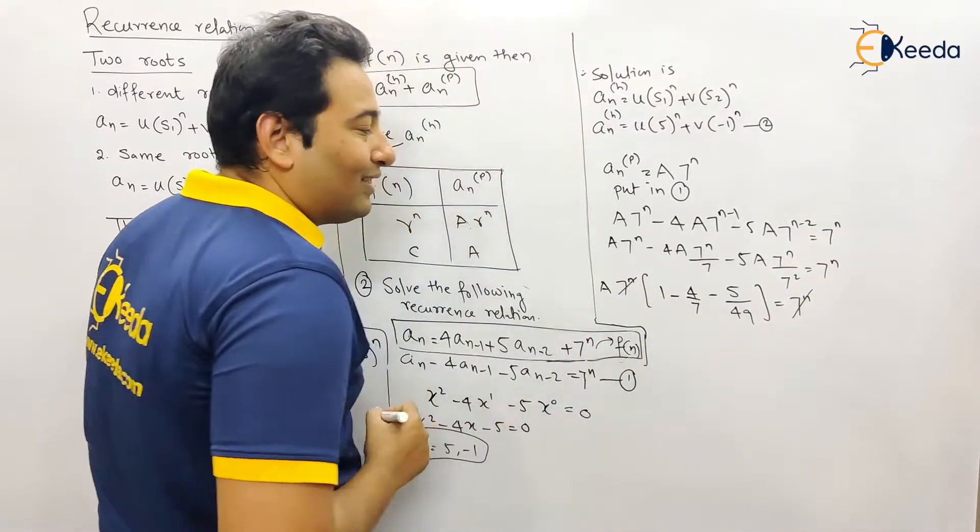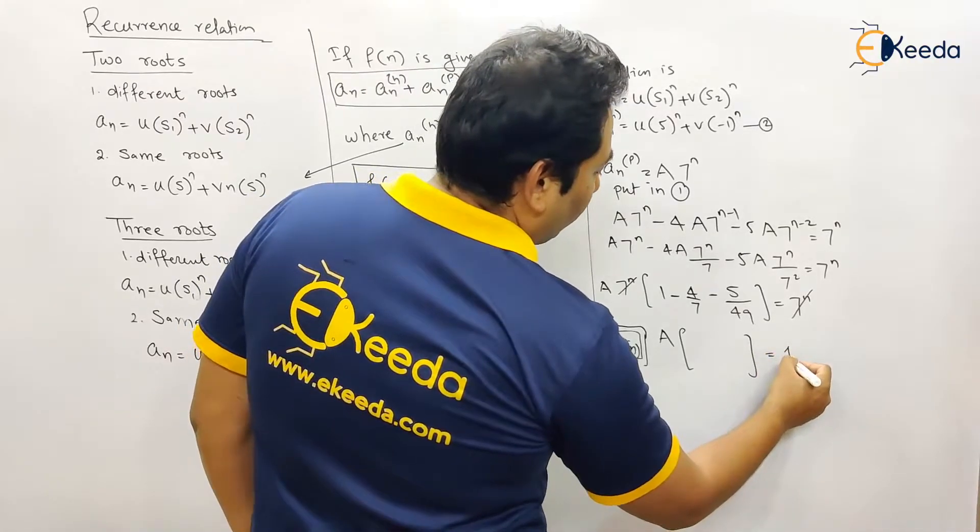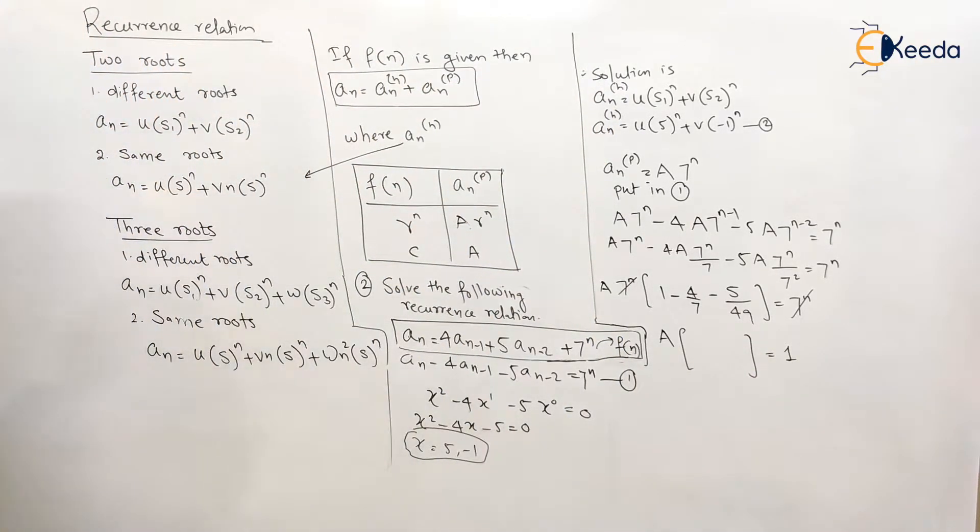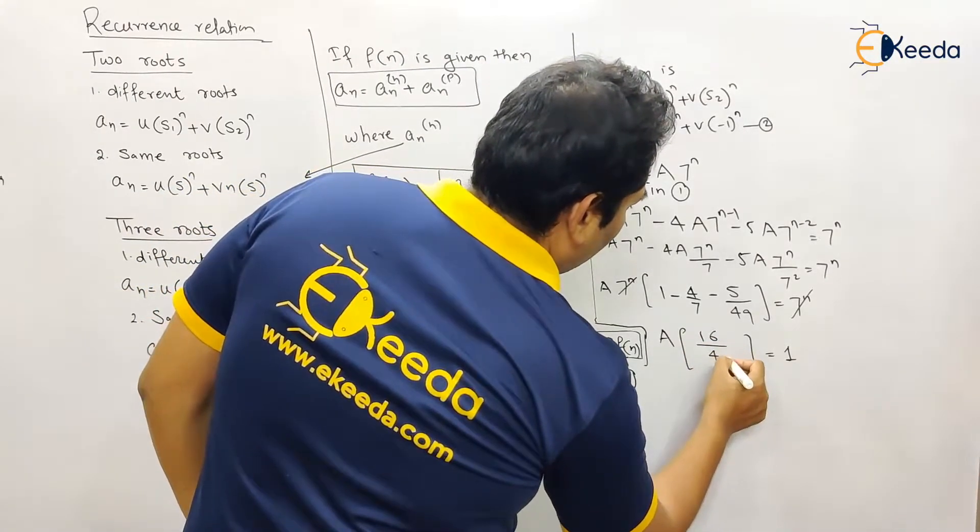So that will be canceled from both the sides. a in bracket, we need to solve this. So let us do the calculations. 16 by 49.